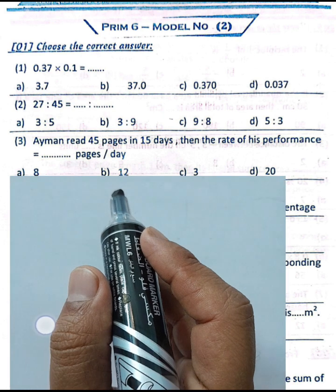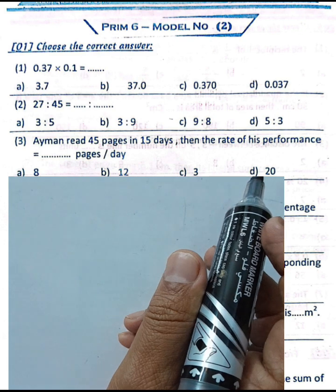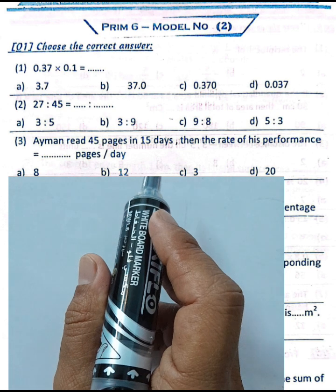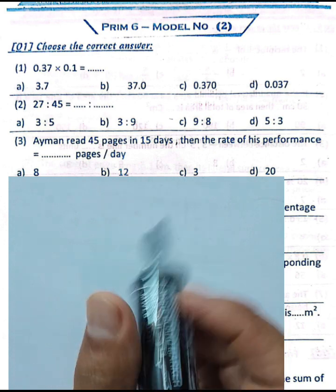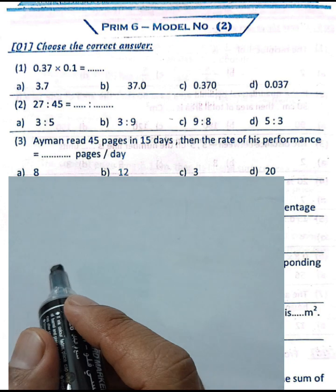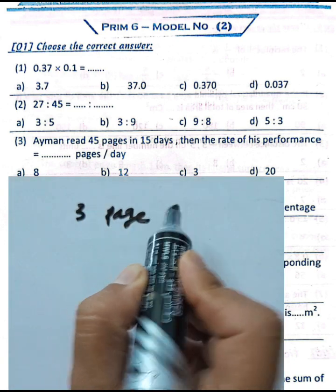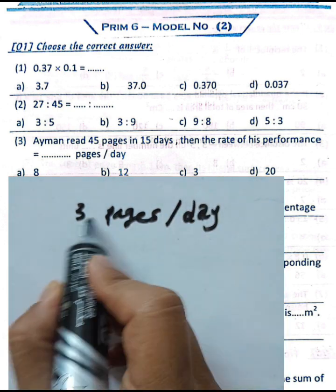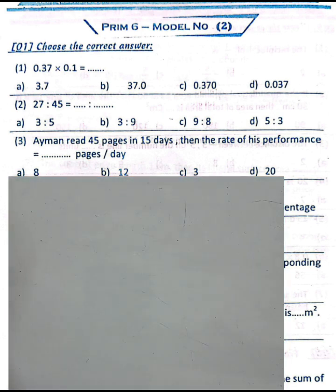Question number three: Amen read 45 pages in 15 days. To find the rate of his performance in pages per day, we write 45 divided by 15, which equals 3. He reads 3 pages per day. Write 3 in the space.